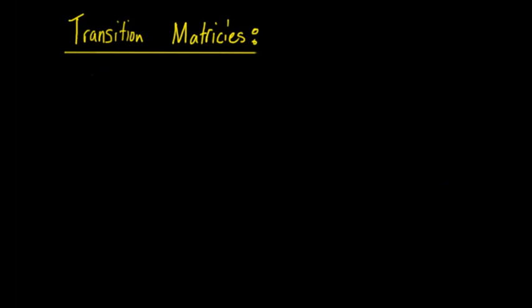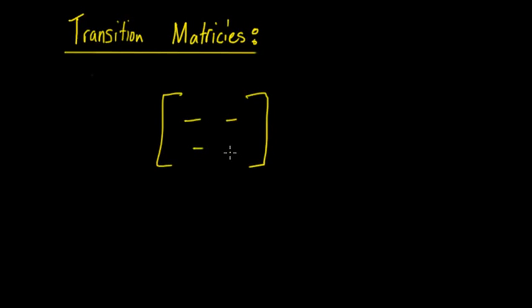In general, the transition matrix is a 2x2 matrix with four entries. Along this column you have A, which you can think of as the success.